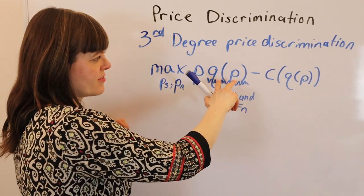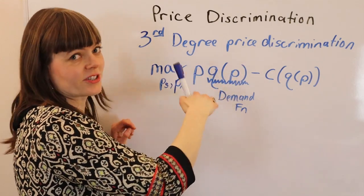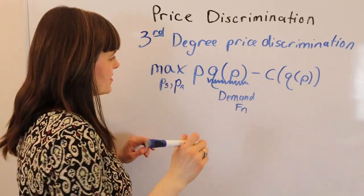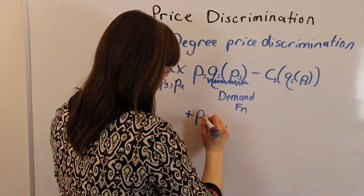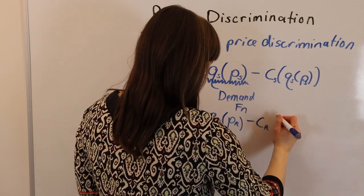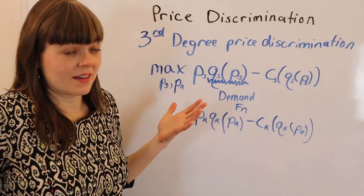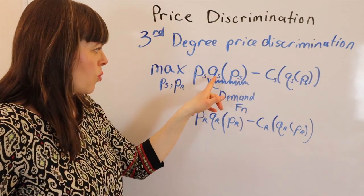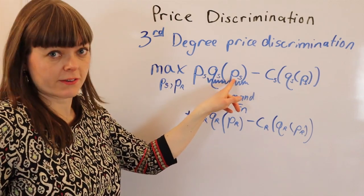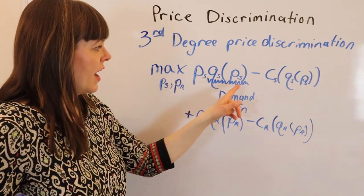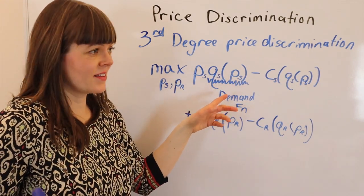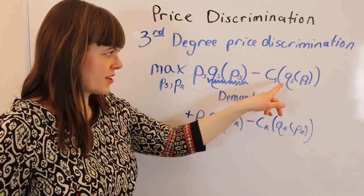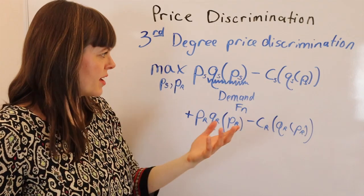That means our demand functions have to be in relation to those, so we just add subscripts throughout the problem. Watch this. All right, that's it. It's literally just price for senior citizens times quantity for senior citizens, which is a function of price for senior citizens. And this is the demand function that senior citizens have for the product. And then the cost structure, of course costs depend on quantity, which depends on price.